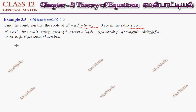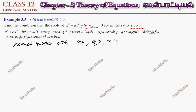Since the roots are in the ratio p to q to r, the actual roots are proportional to a common factor lambda. So the actual roots are p·lambda, q·lambda, and r·lambda. Now, consider the general cubic equation: ax³ + bx² + cx + d = 0.